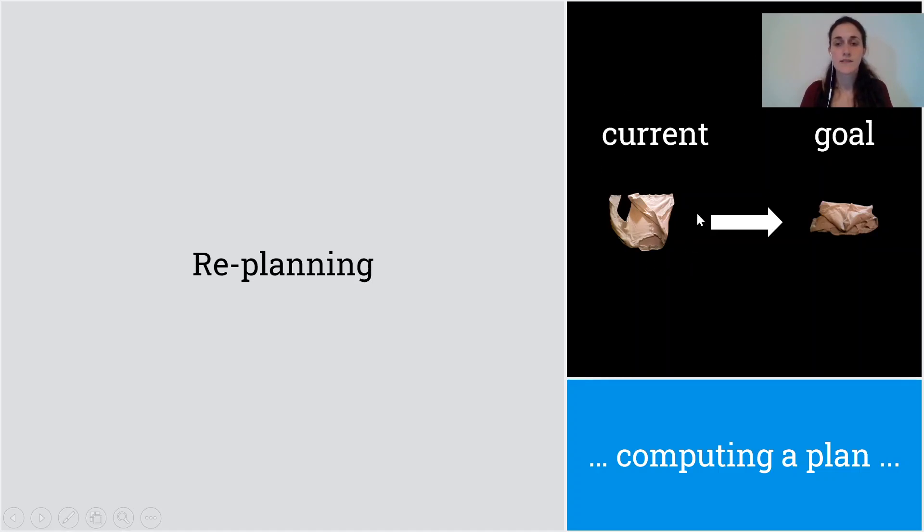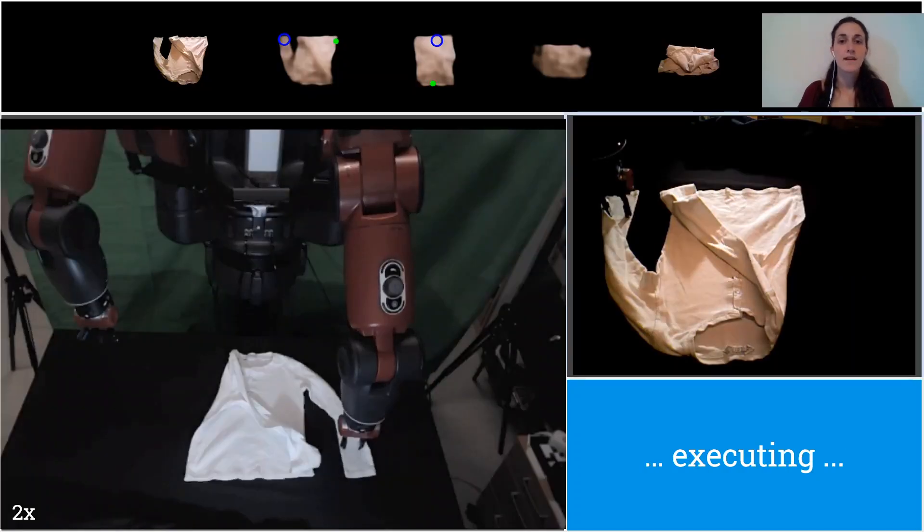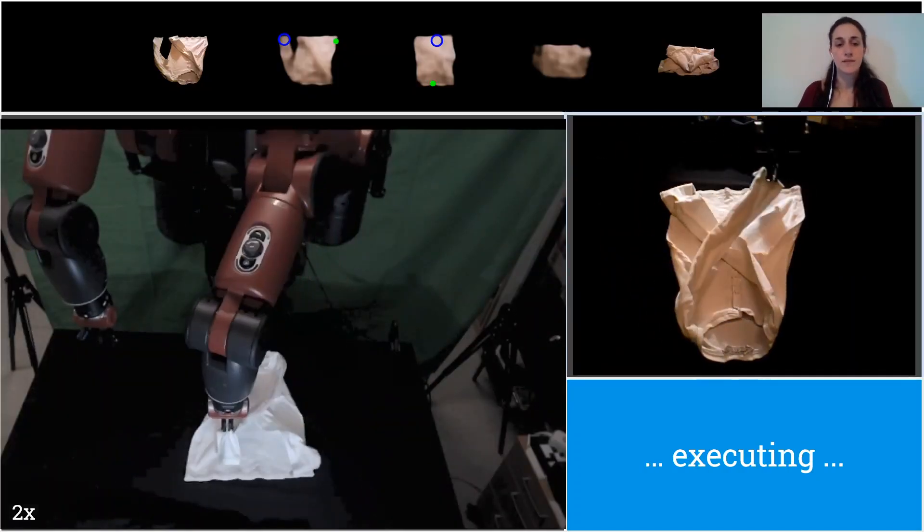So now the start state is the current state of the system, and we get again the visual action plans to achieve the goal configuration. We select the one to perform that's now unique, and we execute the respective action.